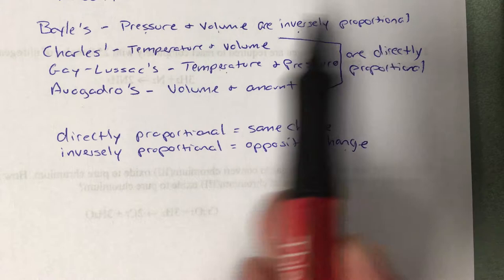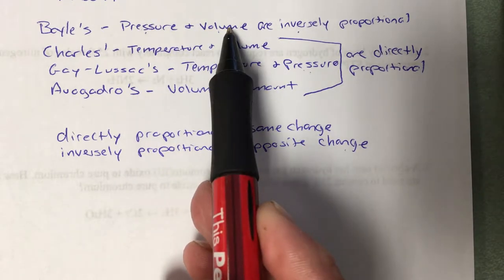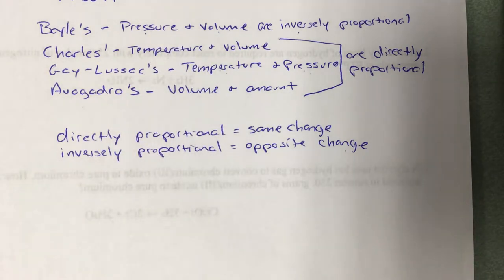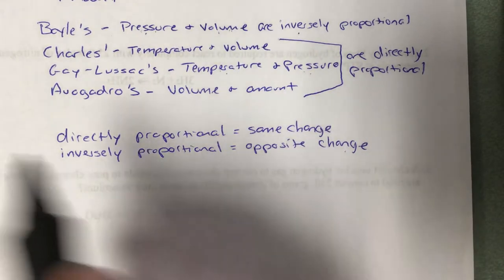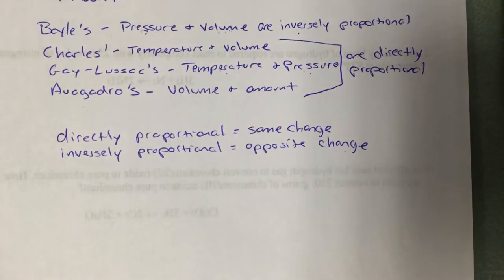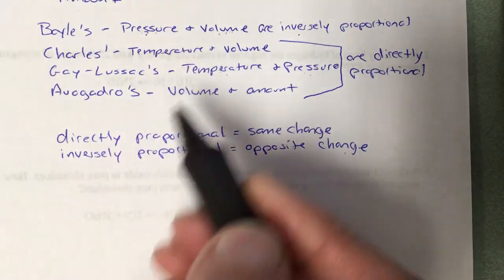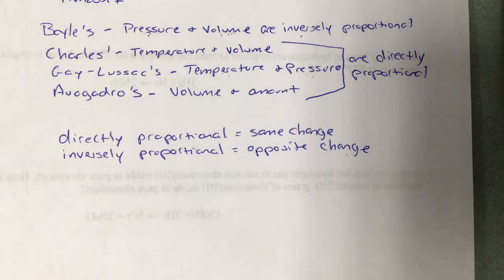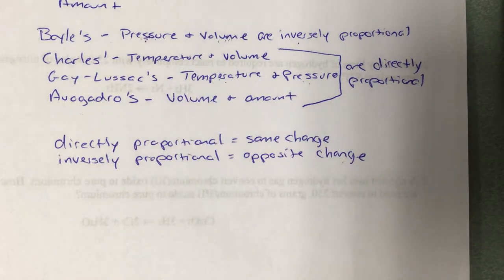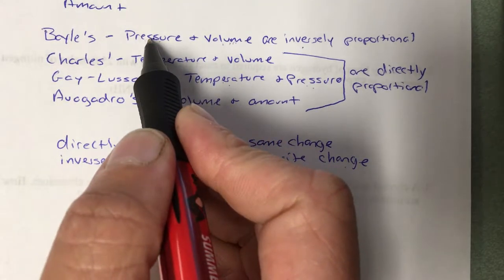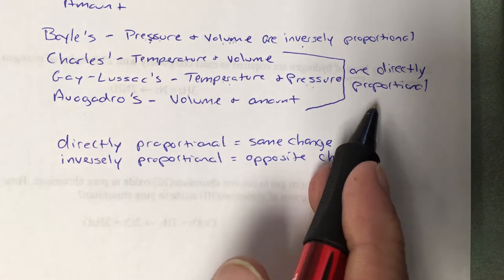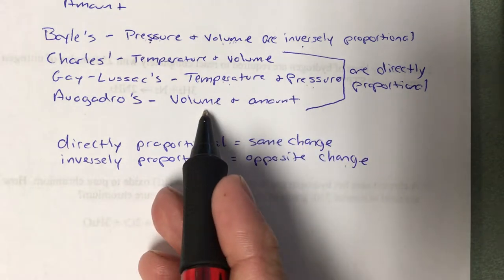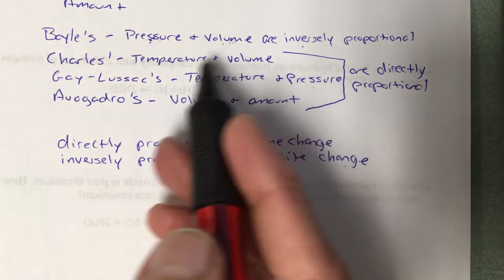Inversely proportional means they change in the opposite way. When pressure goes up, volume goes down; if volume goes up, pressure goes down. If I double the volume, I'd half the pressure. If I half the pressure, I'd double the volume. Four times the volume gives a quarter of the pressure. Seven times the pressure gives one-seventh the volume. Directly proportional works the same way — three times the amount gives three times the volume. One-sixth the volume means one-sixth the temperature.